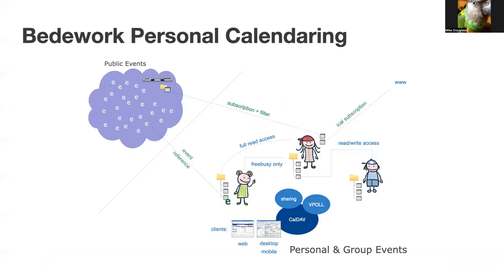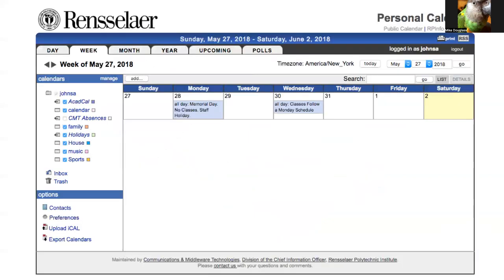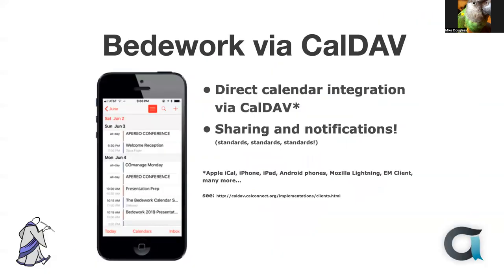Personal calendaring. Personal calendaring is personal and group calendaring. Here's a big picture which shows all the paths, and we do have a web client. It works very well via CalDAV. We support the protocol and have supported it from the earliest days, so you can get it on your phone. We include sharing and notifications and a list of devices and applications that we can use to access Beadwork.